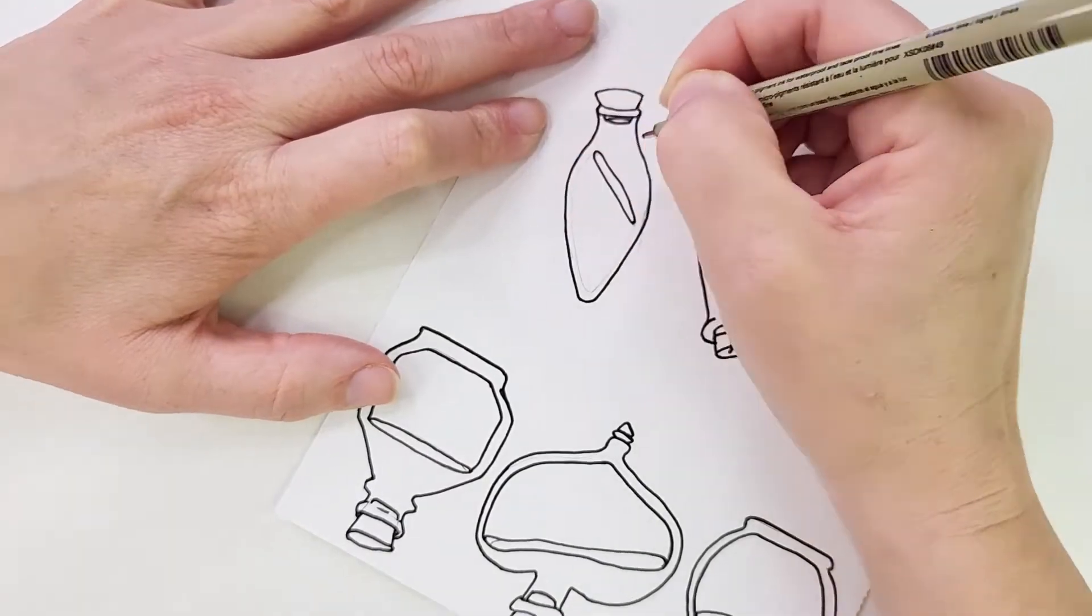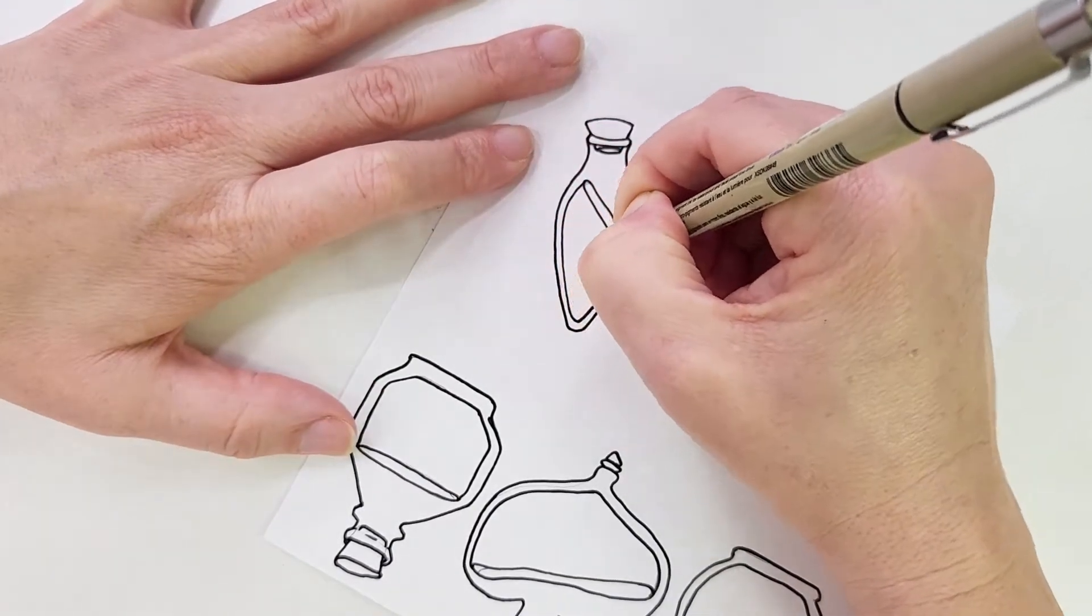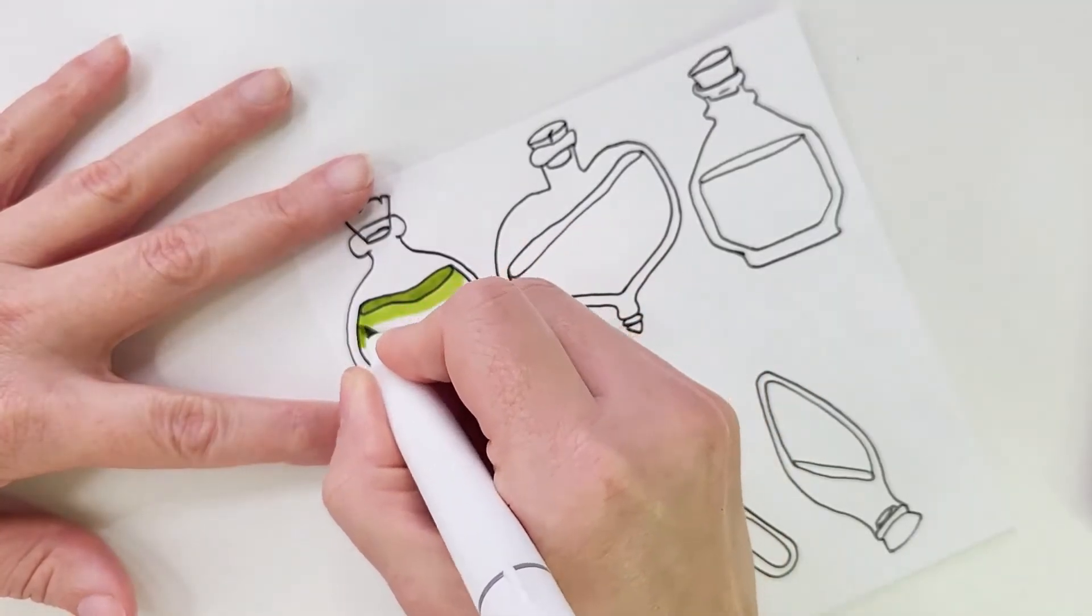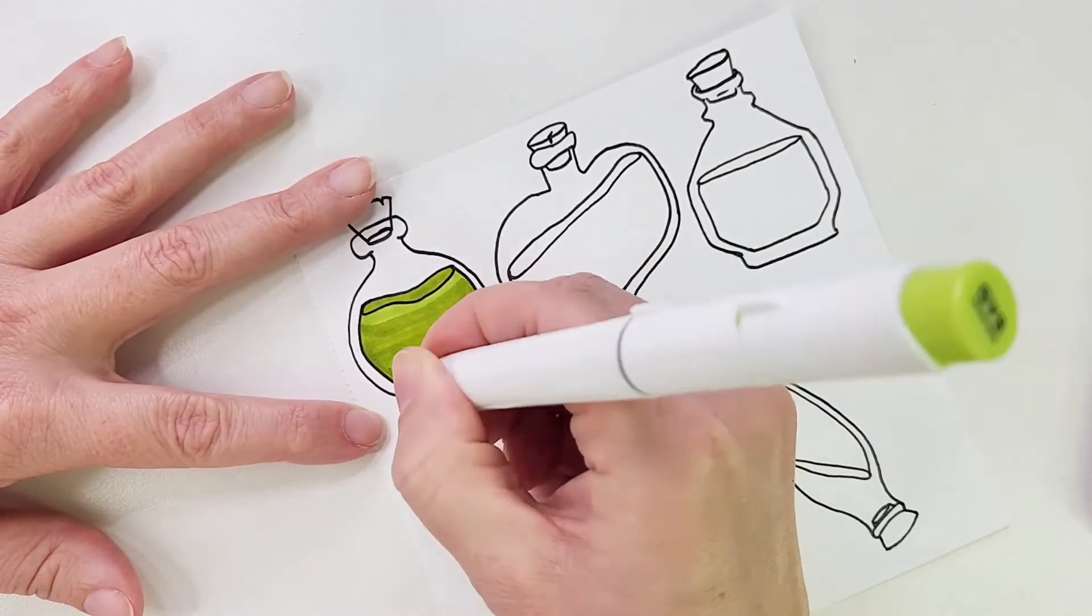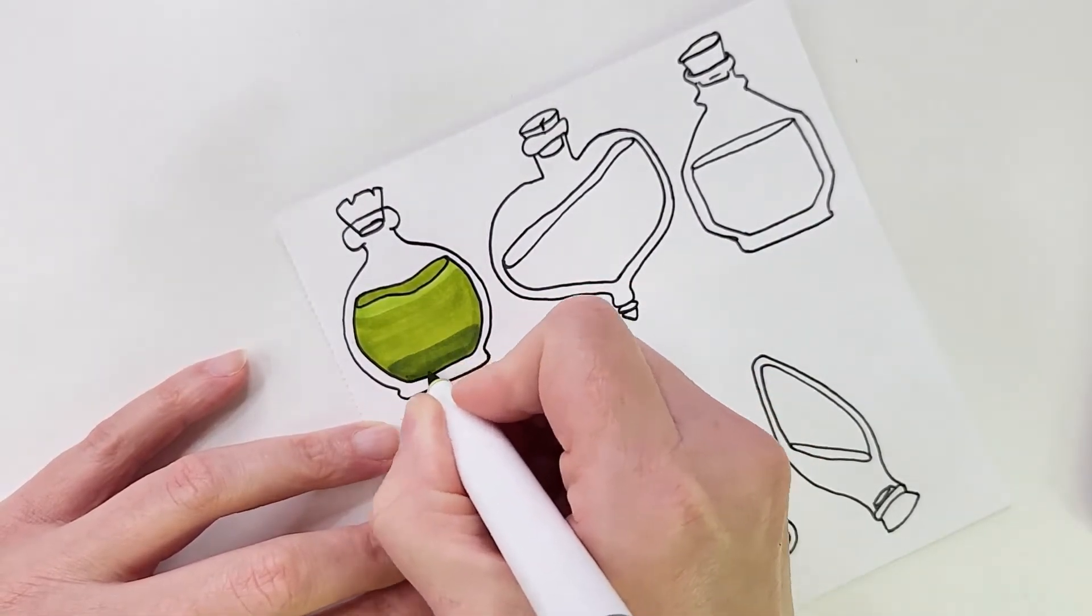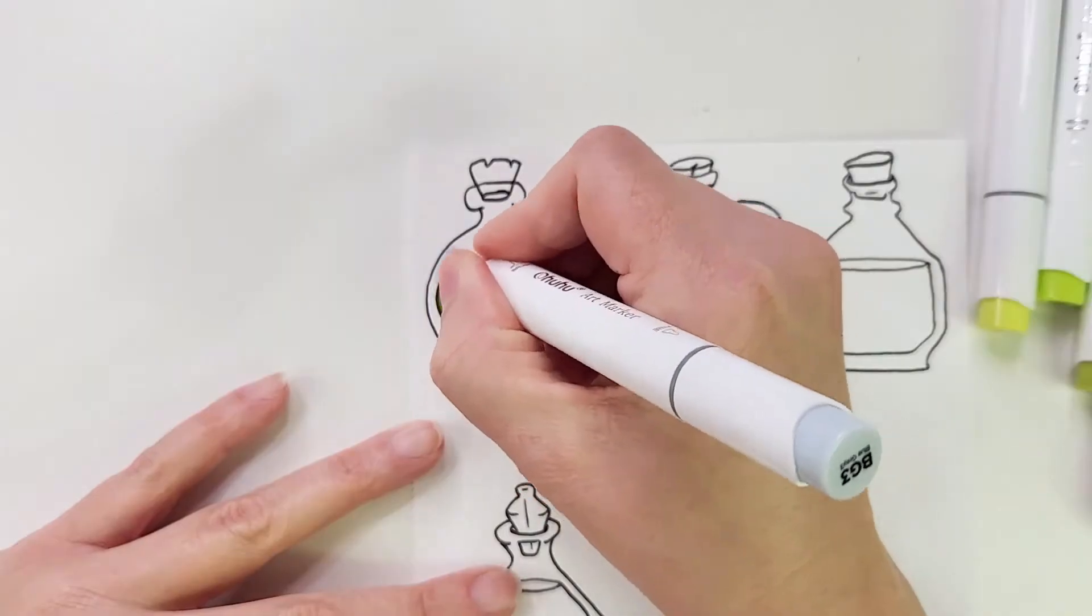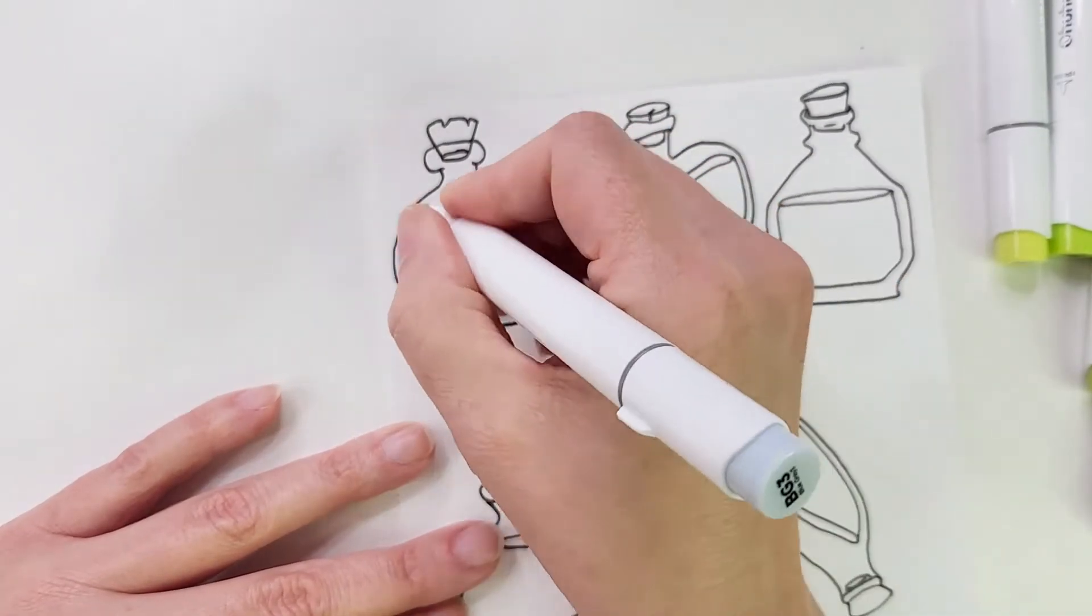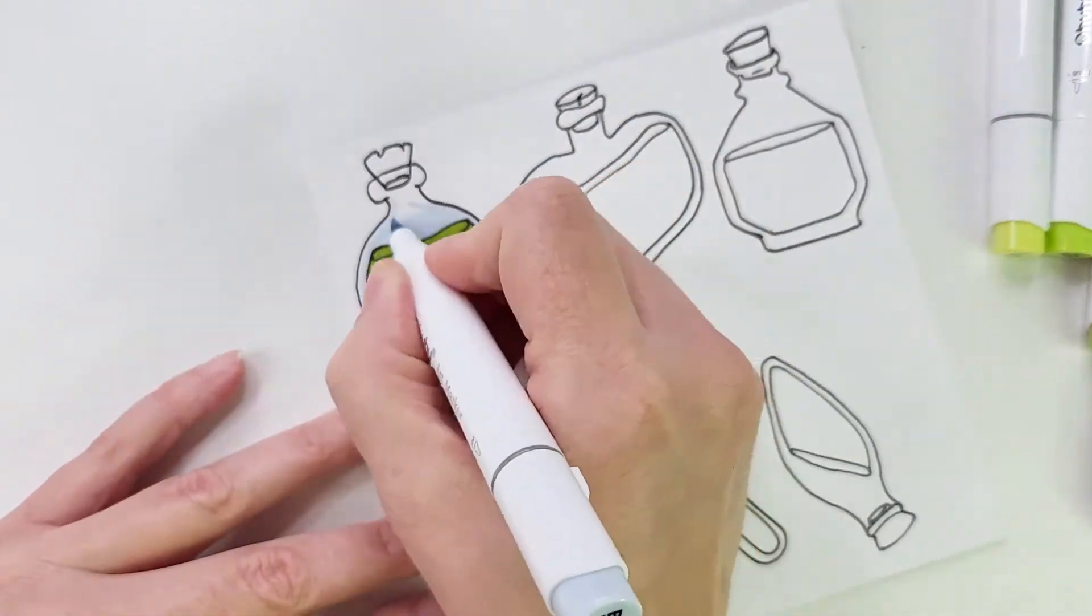I'm reversing my steps this time and outlining the bottles first, then going in with the Ohuhu markers to color them. Sometimes I feel like I'm really starting to get the hang of these markers but I still do struggle with shadows and highlights, especially without a good reference picture. I did look at some pictures to give me ideas on different shaped bottles and also how to make the liquid and the glass look more clear.